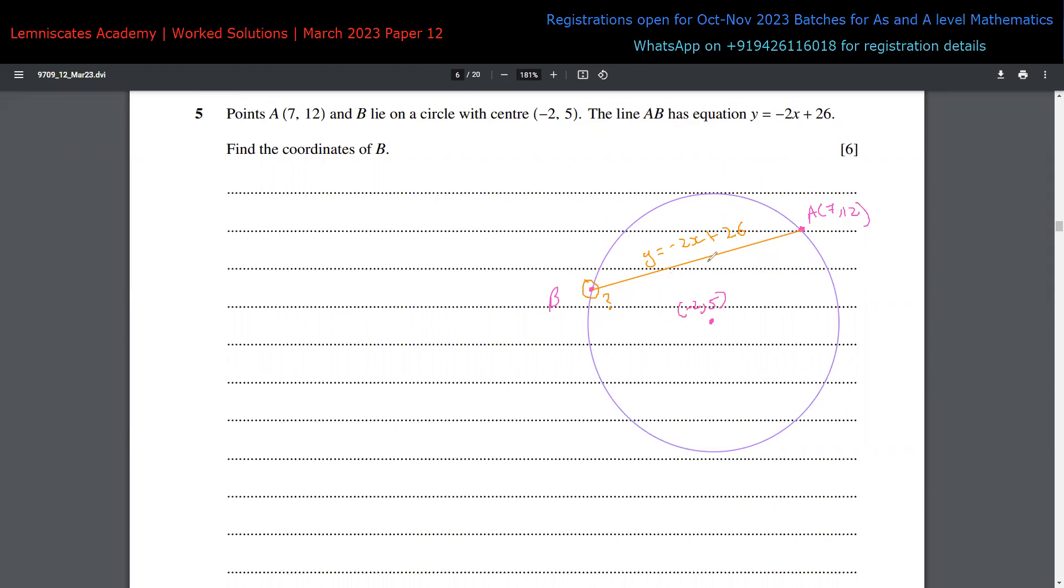The equation of circle is (X - H)² + (Y - K)² = R², where H and K represent the center of the circle and R is the radius. The center is (-2, 5), so the equation is (X + 2)² + (Y - 5)² = R². I don't need R, I need R². To find R², I use the distance between the center and point A.